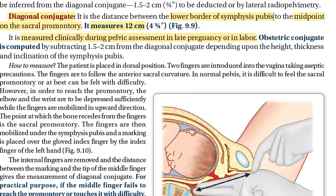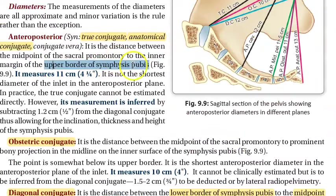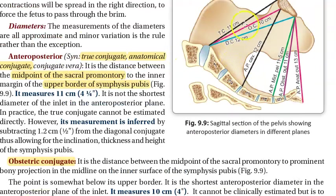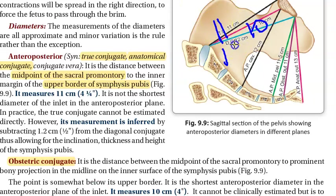When the measurement is from the midpoint of the sacral promontory to the upper border of the pubic symphysis, it is called the true conjugate, anatomical conjugate, or conjugate vera. That measures approximately 11 centimeters. Remember for conjugates: 11, 10, 12.